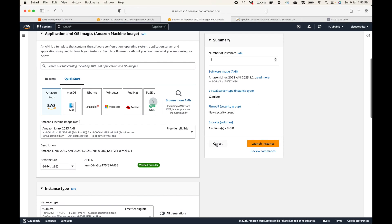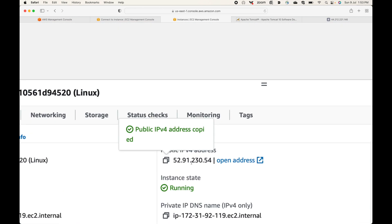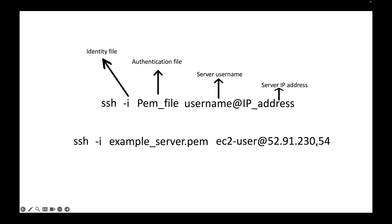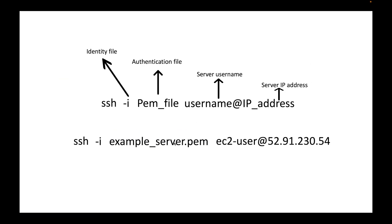As of now we are using the public IP address. In upcoming sessions we will also look at how you can connect using the private IP. The full command format is: SSH space hyphen I space the PEM file. If you're not sure what your PEM file is, go to the server details and scroll down — you should be able to see the PEM file name there. Depending on the PEM file you created and the IP address, you will need to provide those details accordingly. The IP address will always be different for your instance.